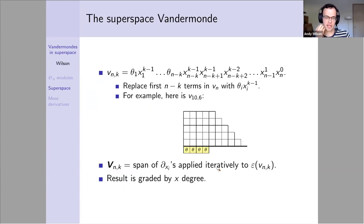Alright, I'm going to spend the rest of my time talking about the superspace Vandermonde. We're going to go through a similar process, but start with a different super monomial. The only difference is that for the first n minus k terms, instead of eliminating all the powers of x, I'm just going to flatten out my staircase. This is the monomial I start with here for n equals 10 and k equals 6. I have four flat steps at the beginning and then I staircase down.